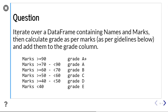So let us read the question. The question is: iterate over a dataframe containing names and marks, then calculate grade as per marks. The rules are: if marks is more than 90 then grade is A+, marks between 70 to 90 grade is A, and likewise the grades go A+, A, B, C, D, and E.